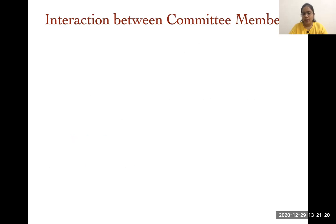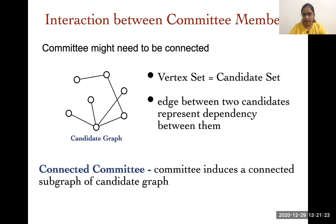Another possible interaction we look for is connectivity. Again, we have a candidate graph where the vertex set is the same as the candidate set, but now the edge between two candidates represents a dependency between them. A committee is connected if it induces a connected subgraph of the candidate graph. There are scenarios where we want some kind of connectivity between the candidates — for example, if we are looking for a rescue team, we would like to have connectivity between the committee members. We are the first to study such possible interactions between committee members.